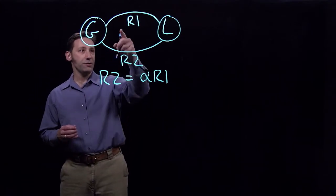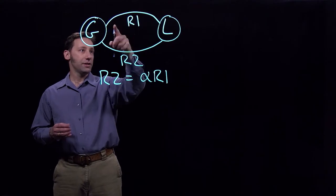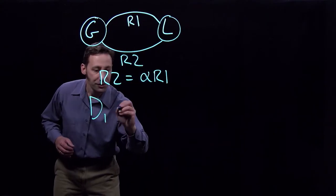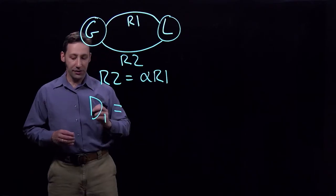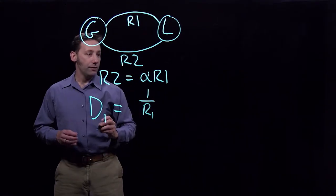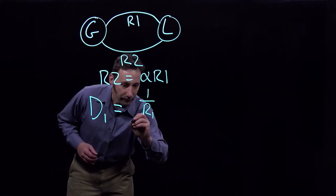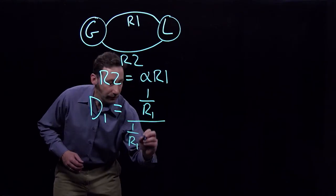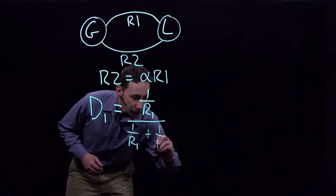So the distribution factor for this line right here with resistance R1, which we call D1, is going to be equal to the inverse of R1, 1 over R1, divided by 1 over R1 plus 1 over R2.